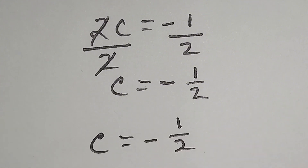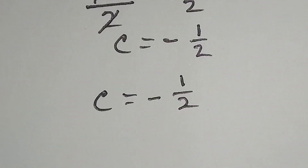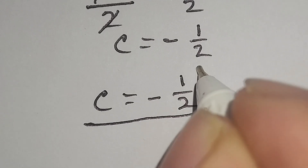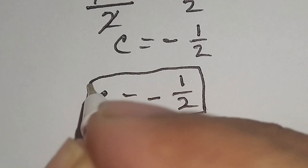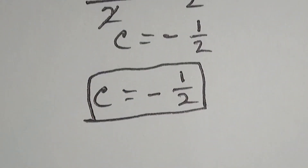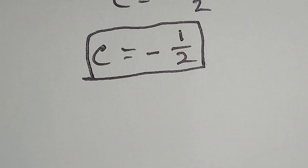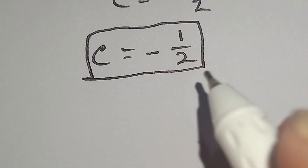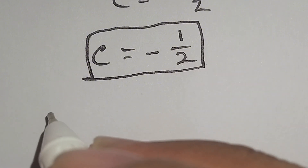Therefore, c is equal to minus one over two. That is our answer. Now we will verify to check whether this value is correct or not.